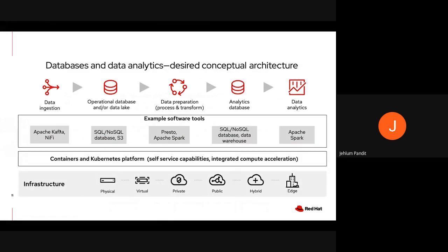This is a desired conceptual architecture for databases and data analytics on containers in Kubernetes. The first step in the lifecycle is to ingest and aggregate data from various sources such as sensors and smart devices, social media streams, and banking transactions. ETL operations are carried out on various forms of data, such as stream data and batch data, and then the data is ingested. This data can be stored in an operational database for online transaction processing, or in a data lake for data analytics. The database could be SQL or NoSQL, and the data lake could be in S3 object storage.